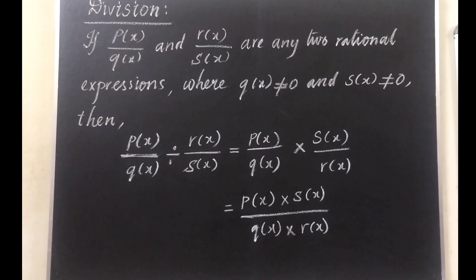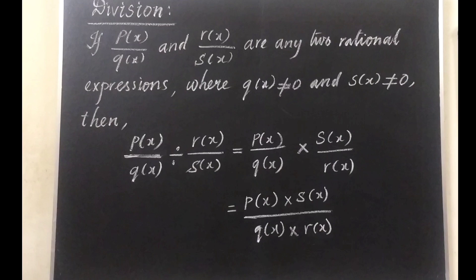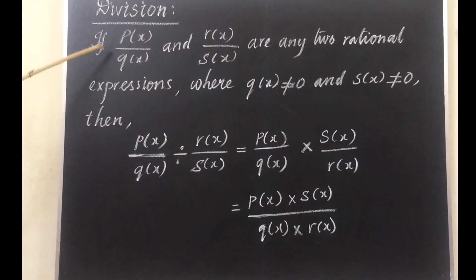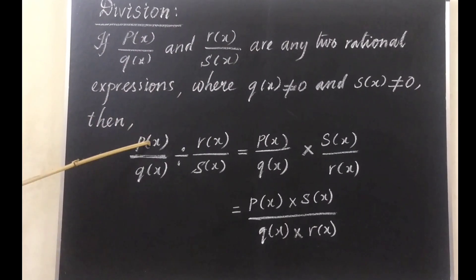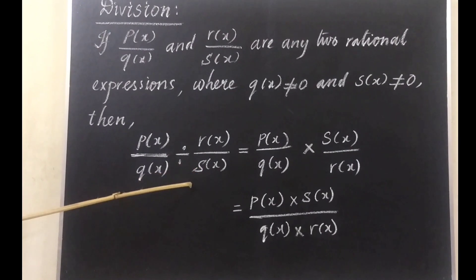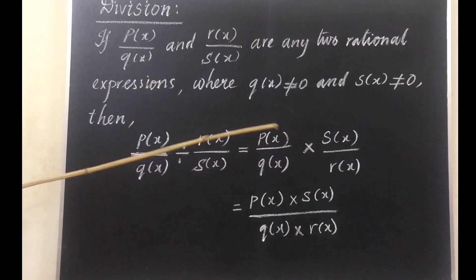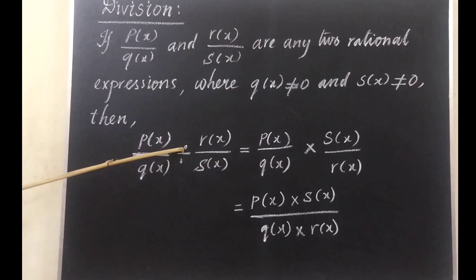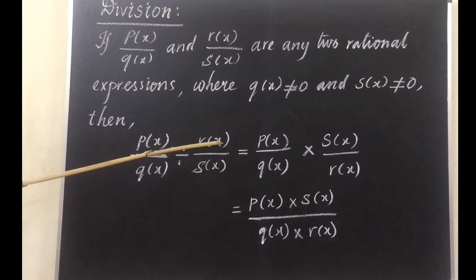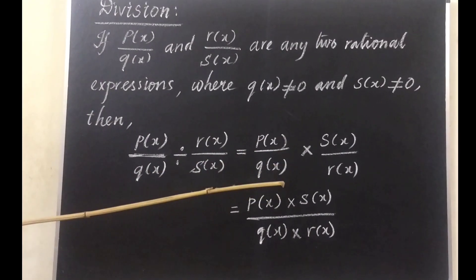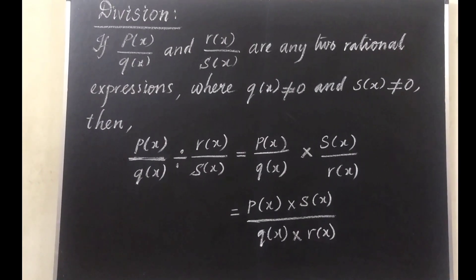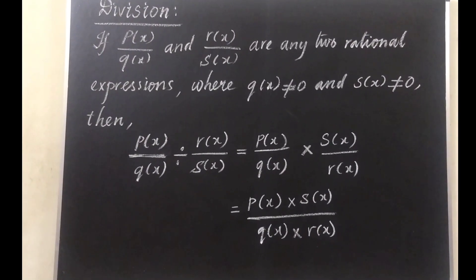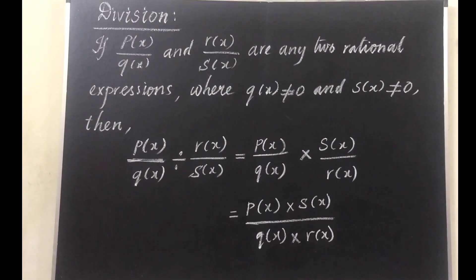Division of rational expressions: for dividing two rational expressions, recall what you learnt in earlier classes. To divide two rational numbers, we change to multiplication form by taking the reciprocal of the second one. So p(x)/q(x) ÷ r(x)/s(x) is rewritten as p(x)/q(x) × s(x)/r(x). After taking the reciprocal of the second rational expression, it follows the same process as multiplication. If anything can be simplified, factorized, or eliminated, we must eliminate it.